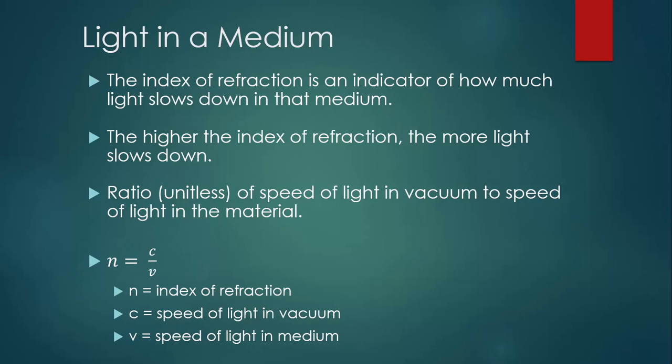Once again, C is the speed of light in vacuum, and V is the speed of light in whatever material it happens to be traveling through.